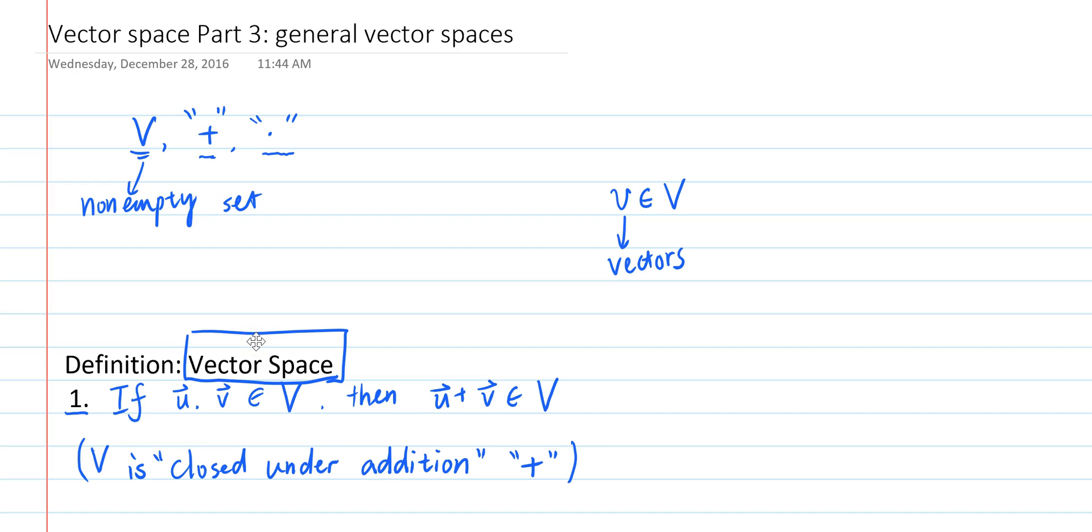So from now on, we understand vectors as elements of a vector space. For example, as we've shown, polynomials of degree 2 or less are vectors. Here we consider the addition and scalar multiplication as the usual addition and scalar multiplication of polynomials.